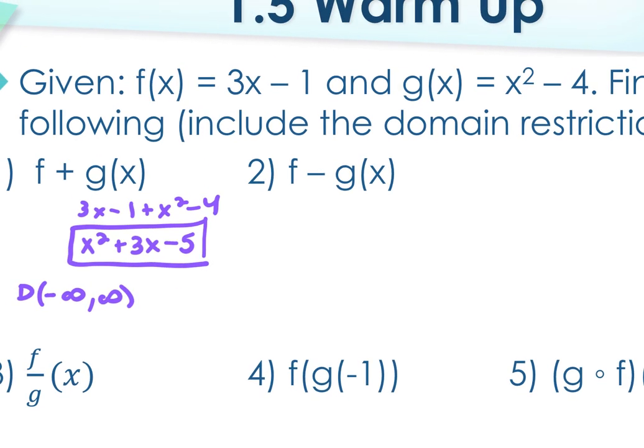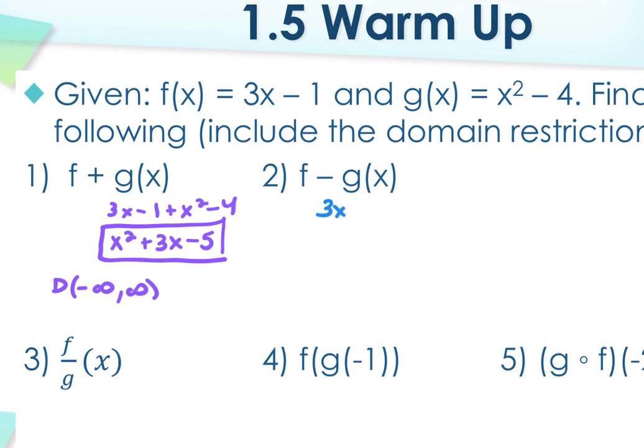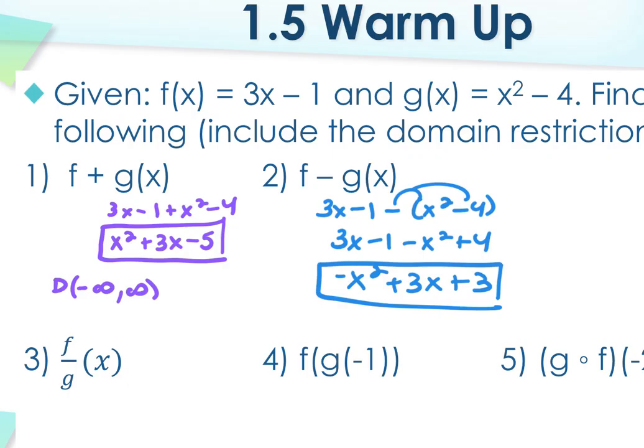When you go to 2, now you're subtracting. So 3x minus 1 minus x squared minus 4 means that minus is going to go to both. So 3x minus 1 minus x squared plus 4, and I get negative x squared plus 3x plus 3. And again, no domain restriction from the beginning, nothing new got added. So my domain is negative infinity to positive infinity.